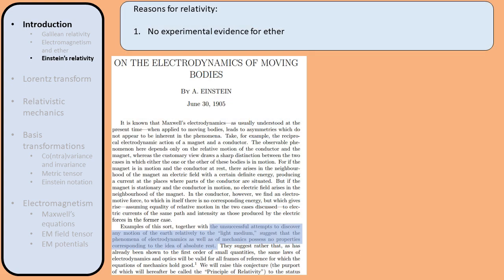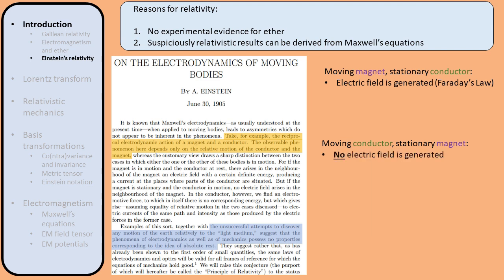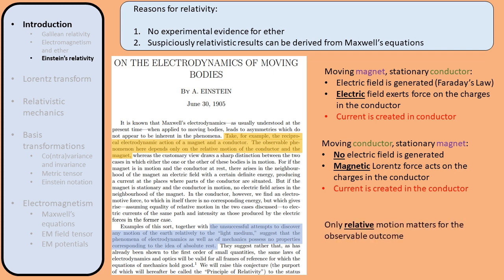So the Michelson-Morley experiment was one reason for Einstein to propose his theory of relativity. The other reason was that Maxwell's equations gave some suspiciously relativistic results. Whether you have a magnet moving past a stationary conductor or a conductor moving past a stationary magnet, in both cases the same current is generated in the conductor. In the first case, an electric field is generated by the moving magnet, but in the second case there is no electric field because the magnet is stationary. In the first case, the electric field exerts a force on the stationary charges in the conductor, whereas in the second case the magnetic field exerts a force on the moving charges. Either way, in both cases there is a force acting on the charges in the conductor, thereby creating a current. So even though different observers would disagree on whether an electric field was created, they agree on the observable outcome, namely the current in the conductor.